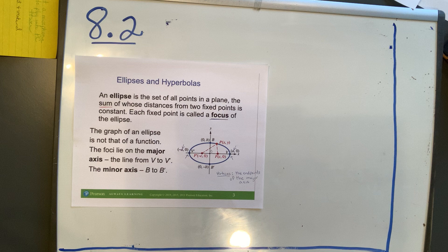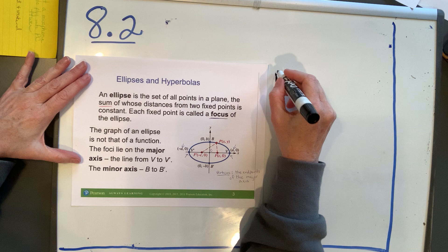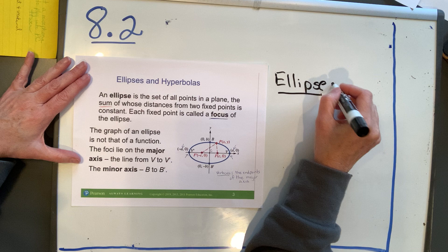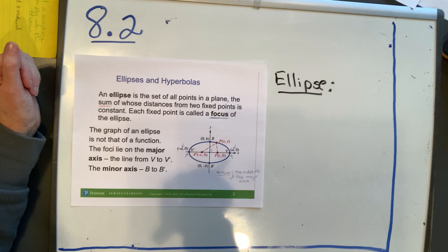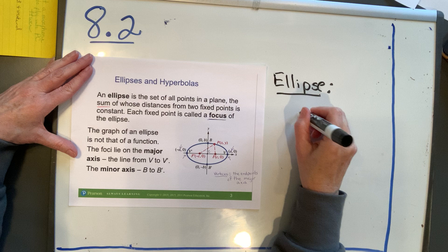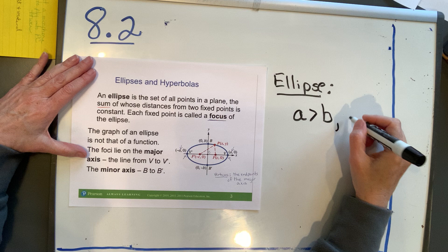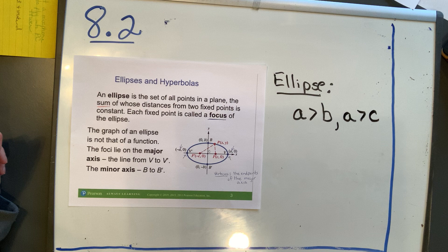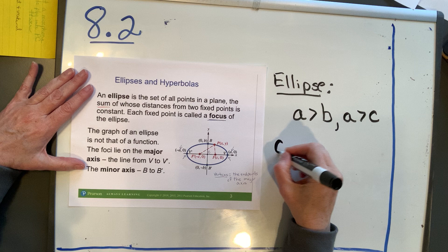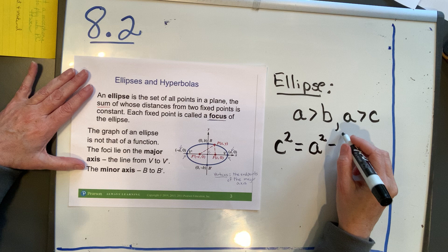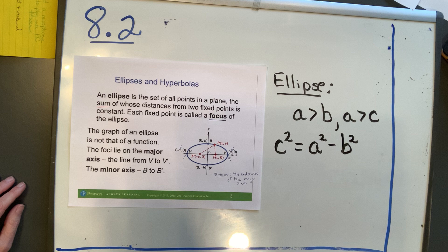On an ellipse, there's a relationship between a, b, and c. A is always going to be greater than b, and a is always going to be greater than c. The relationship between a, b, and c on an ellipse is: c squared equals a squared minus b squared. This will always be a positive number because a is always larger than b.